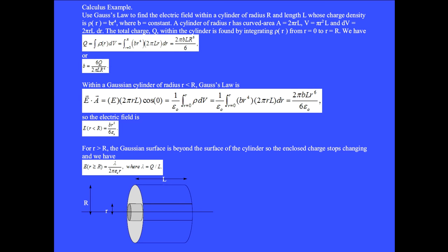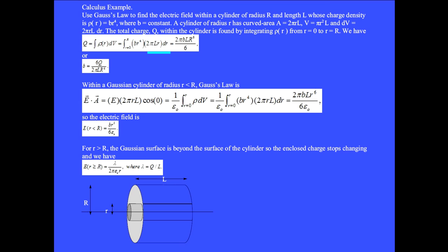We use Gauss's law to find the electric field within a cylinder of radius big R and length L, whose charge density is rho of r equals B r to the fourth, where B is a constant. A cylinder of radius little r has curved area 2 pi r L, volume pi r squared L, and differential volume dV equals 2 pi r L dr. The total charge Q within the cylinder is found by integrating rho of r from zero to big R: Q equals the integral of B r to the fourth times 2 pi r L dr, giving 2 pi B L big R to the sixth over 6, so B equals 6Q over 2 pi L R to the sixth.